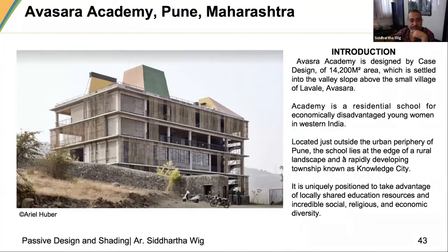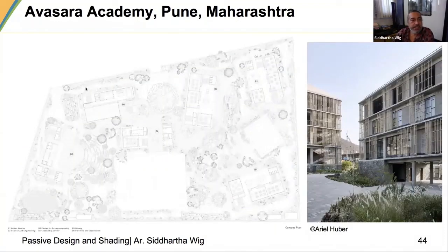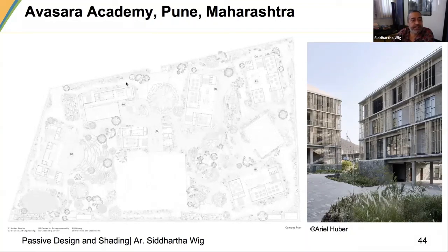The third project is the Absara Academy at Pune. This is an interesting example because it has very simple RCC column and beam construction as the basis of regular design, and the aesthetic that comes out is also from that — it is almost Corbusian in its portrayal.